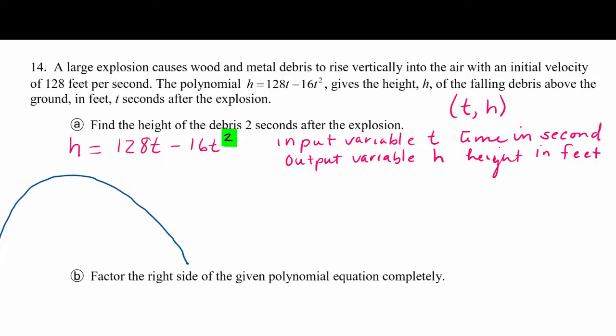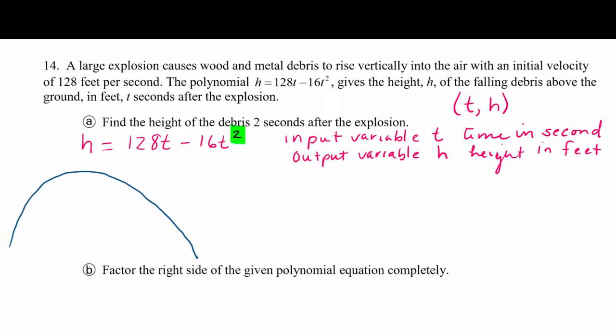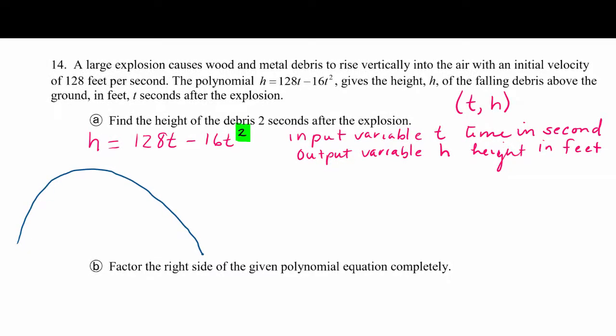And so we are asked to find the height of this debris 2 seconds after the explosion. So as you're looking at our function over here, if I was going to put a set of coordinate axes, then this would be the t-axis, and this would be the h, the height. And we're looking for t = 2. It's an ordered pair like this on this parabola. And we are trying to find the h coordinate, or the height, at that point in the flight of the debris.